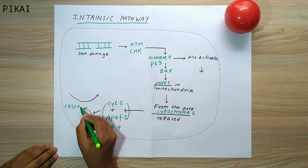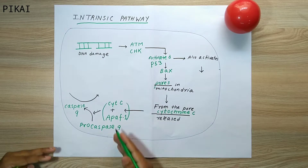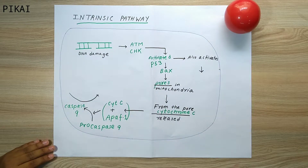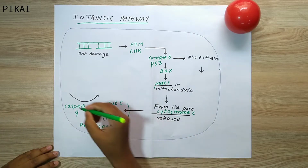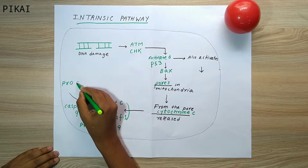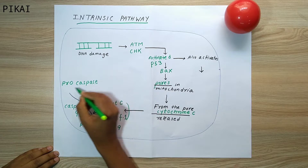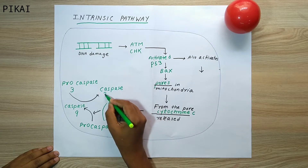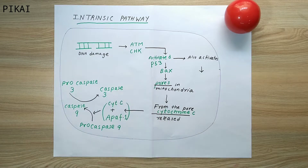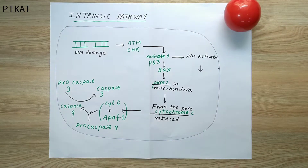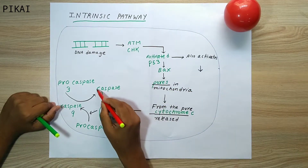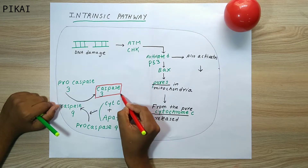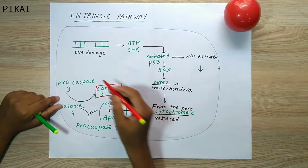This activated caspase 9 then converts pro-caspase 3 into caspase 3. Pro-caspase 3, which is the inactive form, gets converted into active caspase 3 — this is almost the final step of the intrinsic pathway of apoptosis. This activated caspase 3 now acts on the nucleus.